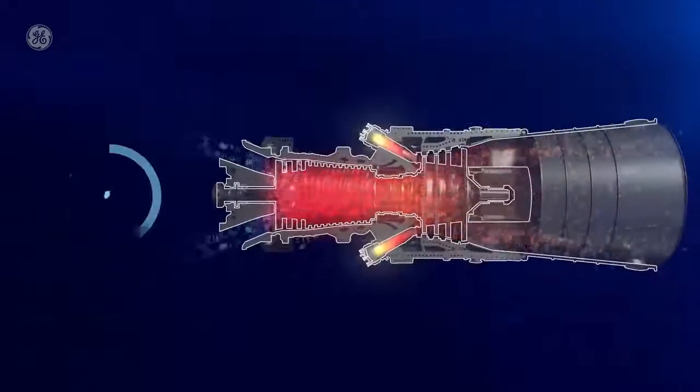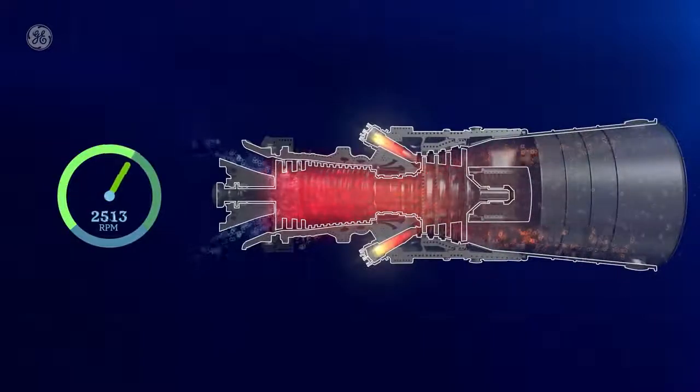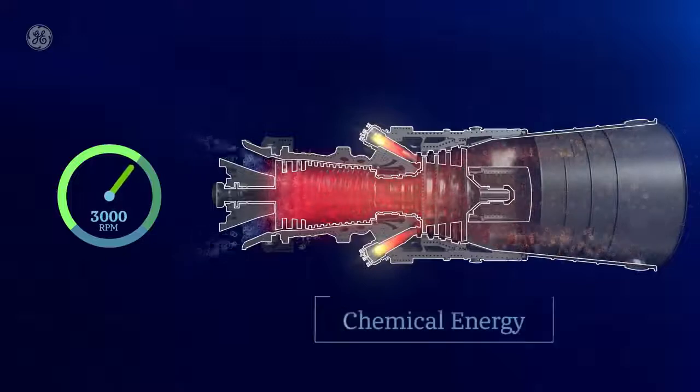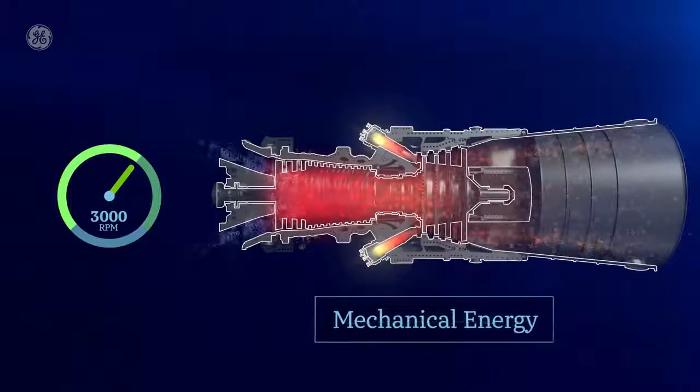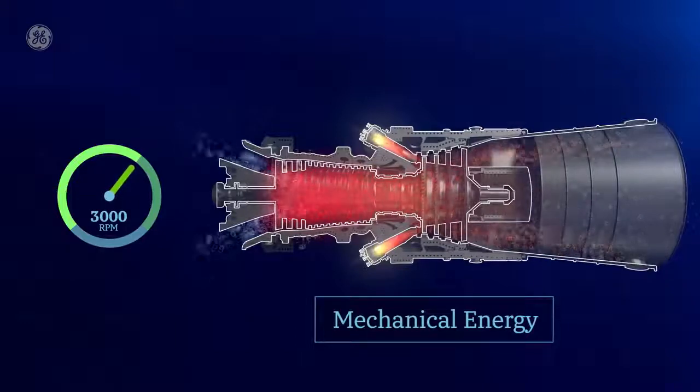The hot gas created from the ignited mixture moves through the turbine blades, forcing them to spin at more than 3,000 rpm. Chemical energy has now been converted into mechanical energy. The turbine then captures energy from the expanding gas which causes the drive shaft to rotate.